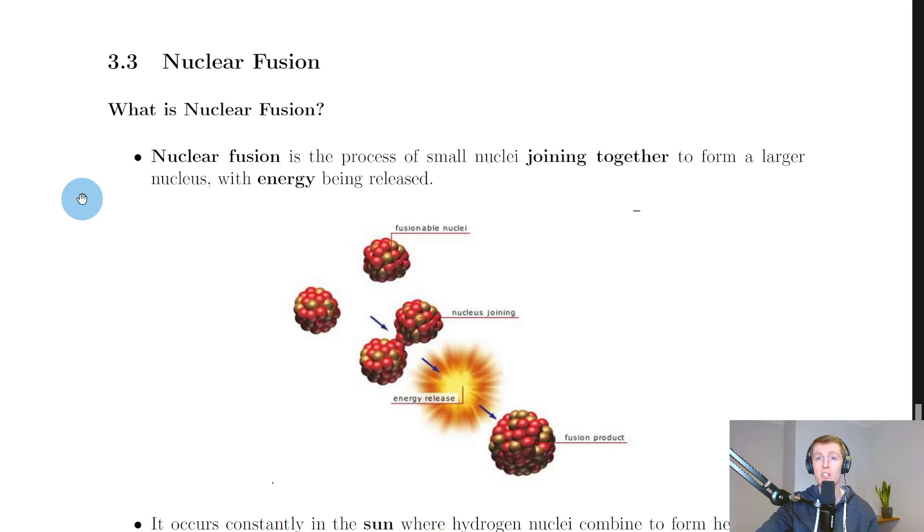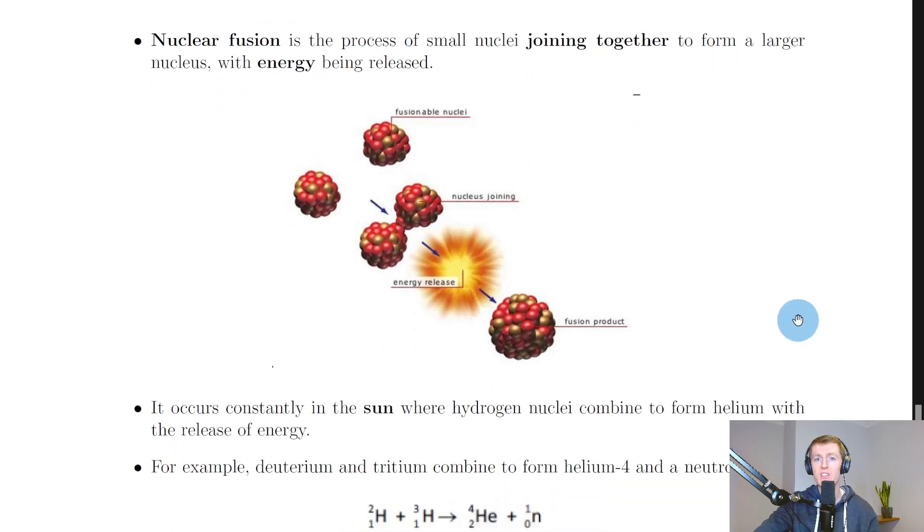instead of splitting a nucleus apart to produce fission fragments and energy, we're joining together two smaller nuclei instead. So nuclear fusion is the process of small nuclei joining together to form a larger nucleus with energy being released. And you can see that in the picture here, so here we've got two nuclei which